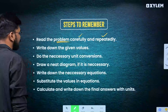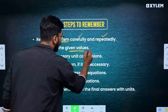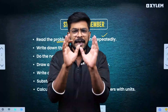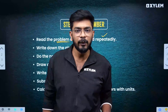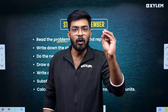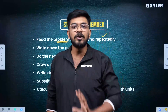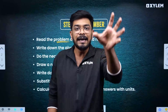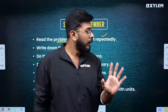The next point: write down the given values. From the question, identify the certain given values and write them down. This is the second step.